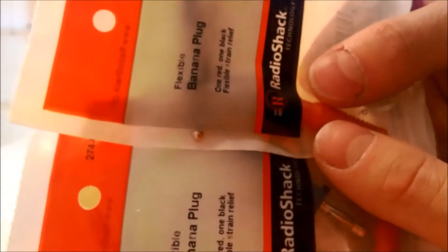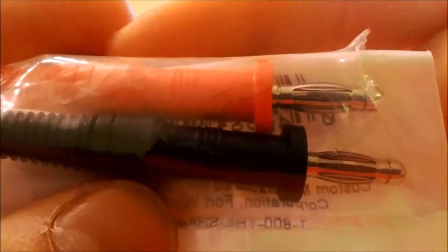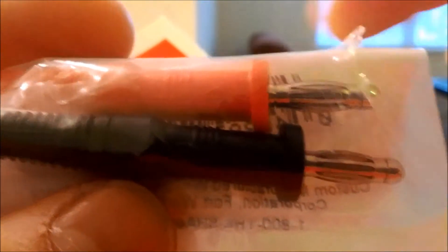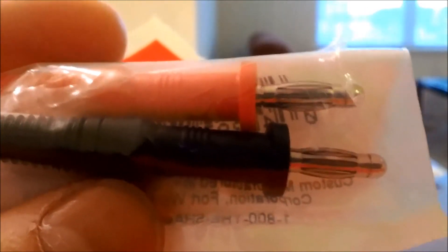Radio Shack brand banana jacks. They look to be fairly good quality. This part just unscrews and then you could attach your cable through here, solder it, put it back in, and screw it back in. So I got two, a pair. Make some cables out of that.